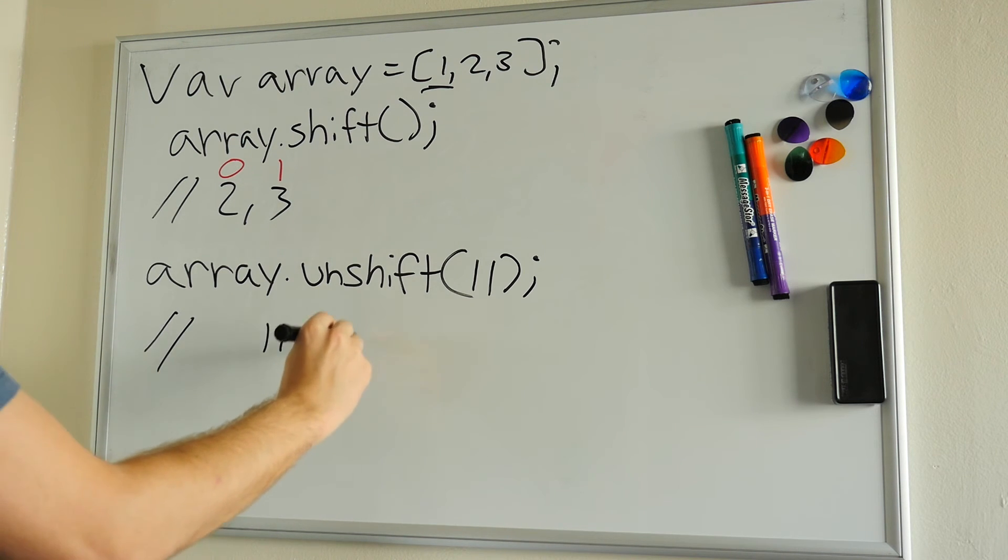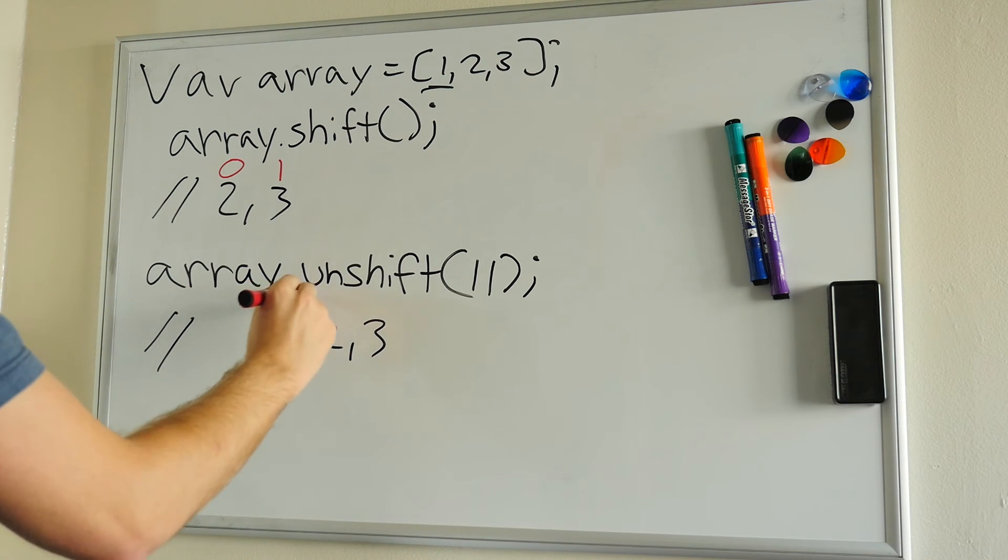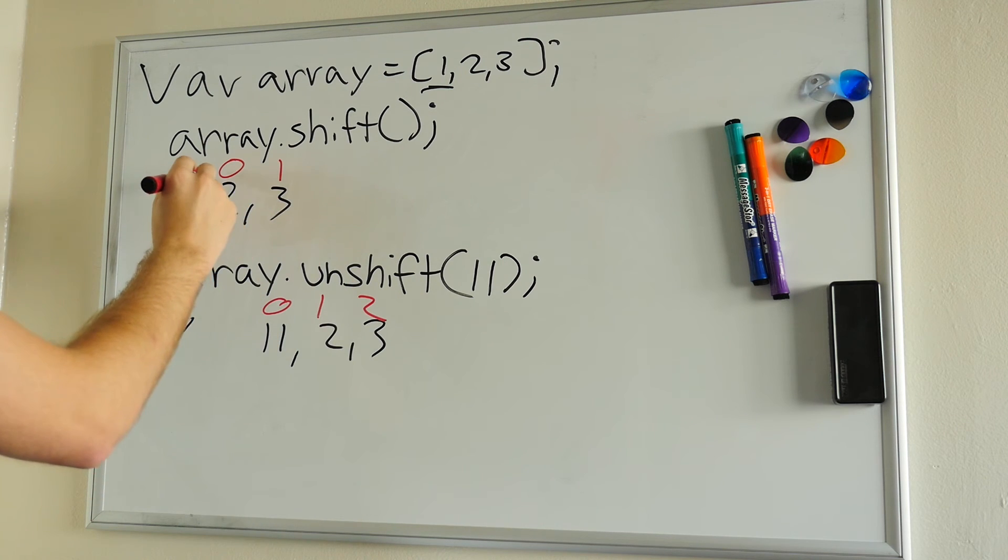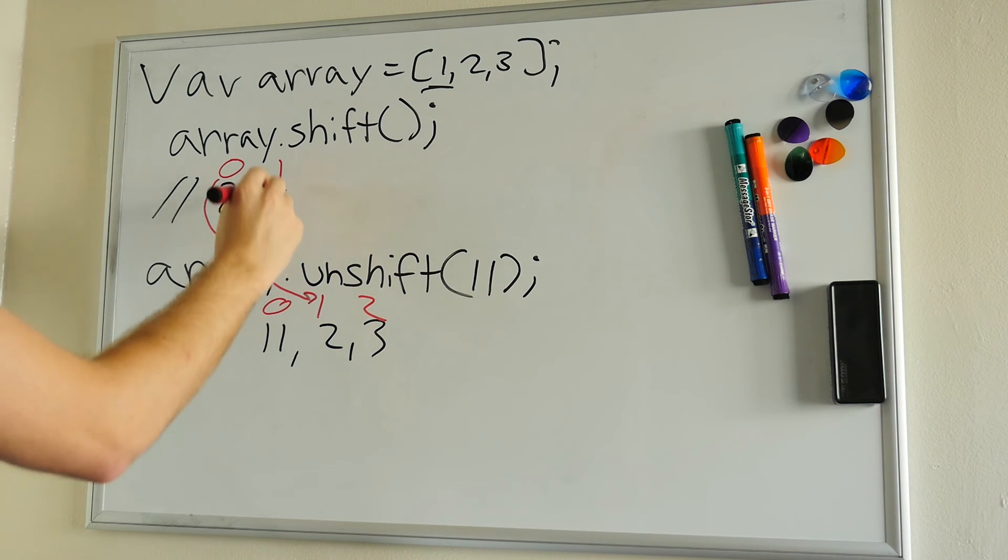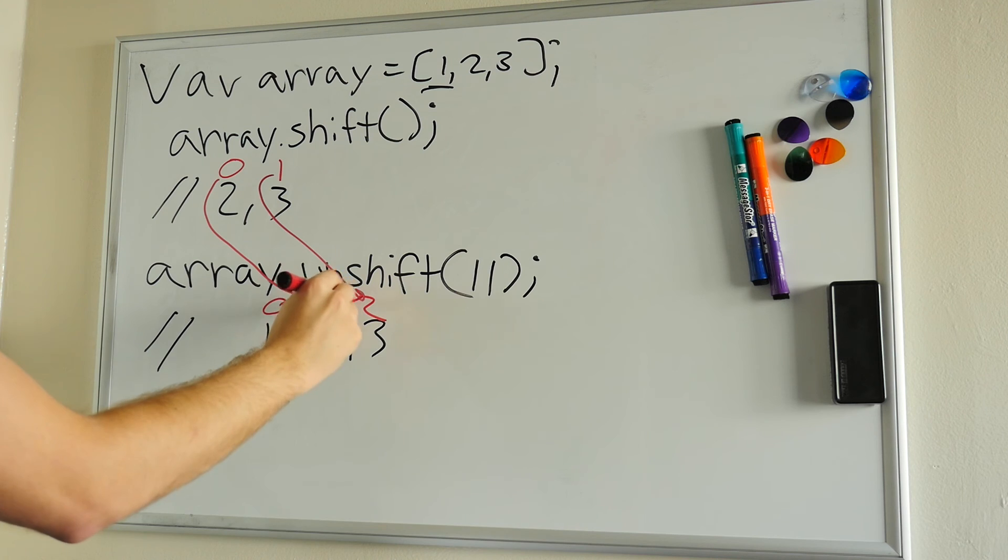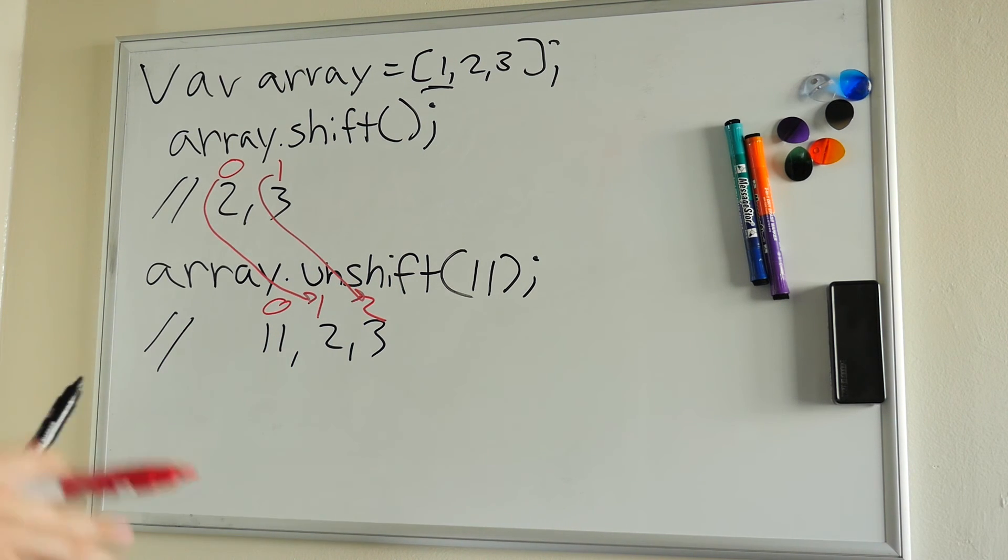The index locations would be 0, 1, and 2. You'll notice that this 0 is now 1, and this 1 index spot is now 2 because we have unshifted it. That's basically how shift and unshift work.